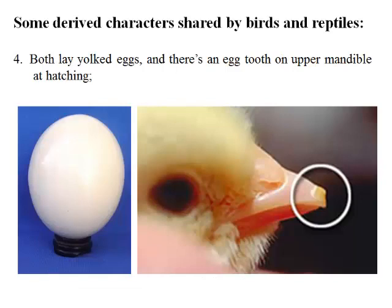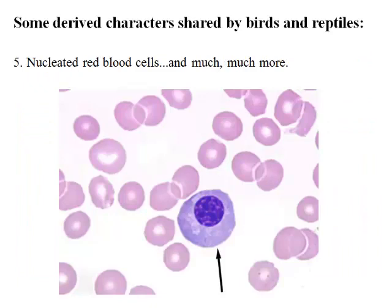Fourth, both birds and reptiles lay yolked eggs, and both have an egg tooth on the upper mandible at hatching to enable the critters to break out of the egg shell. Fifth, they both have nucleated red blood cells. There are many more derived characteristics, but these are five of the key ones.